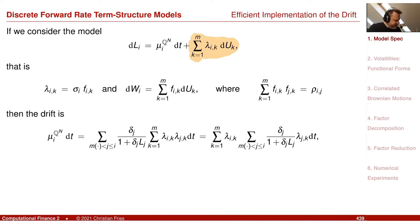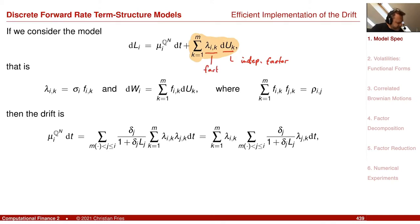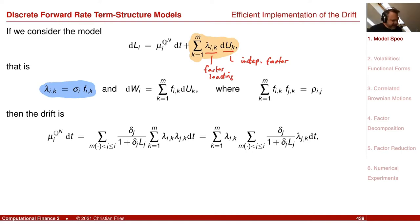Every factor had some factor loading. This was just an equivalent alternative formulation. The link between the two was that Lambda_ik consists of sigma_i and some phi_ik, and the scalar product of two such vectors phi_i and phi_j is the correlation. That was our model.